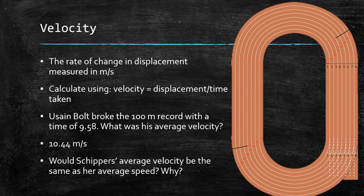However, would Daphne Schippers competing in the 200 metres have the same average velocity as her average speed? The answer is no, because distance would be 200 metres, so to work out average speed you'd do 200 metres divided by her time. Whereas the displacement would be less — it would be the shortest straight line from the 200 metre start to the finish. That gives you a different figure for velocity compared to speed.